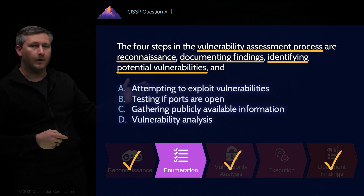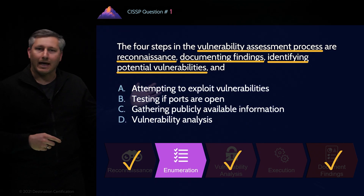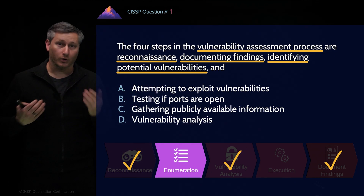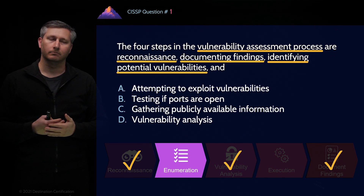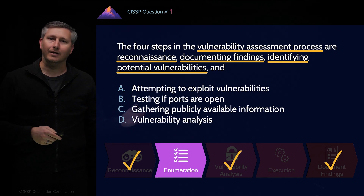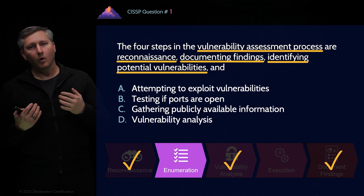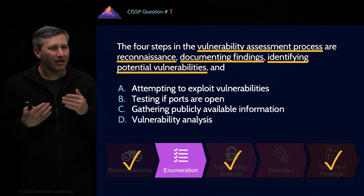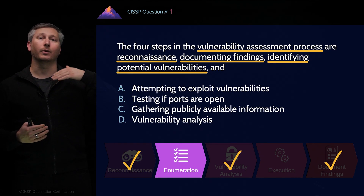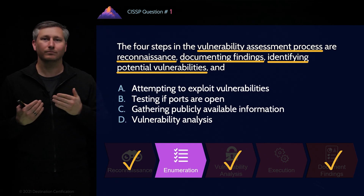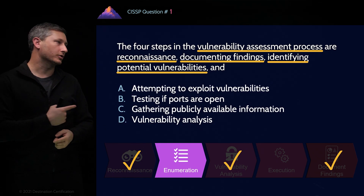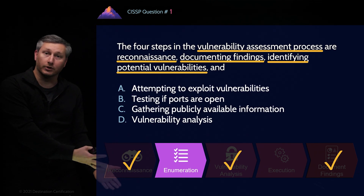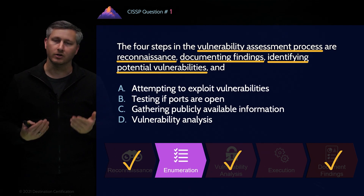So let's go through the answers. Answer A: attempting to exploit vulnerabilities. That's the execution step, which, as we discussed, we don't do in a vulnerability assessment. Answer B: testing if ports are open. That is one of the things you're doing during the enumeration step, but it's not a perfect answer — enumeration is where you're scanning through IP addresses as well. So let's keep looking to see if there's a better answer. Answer C: gathering publicly available information. That's what you're doing during the reconnaissance step, so that's definitely not the answer.